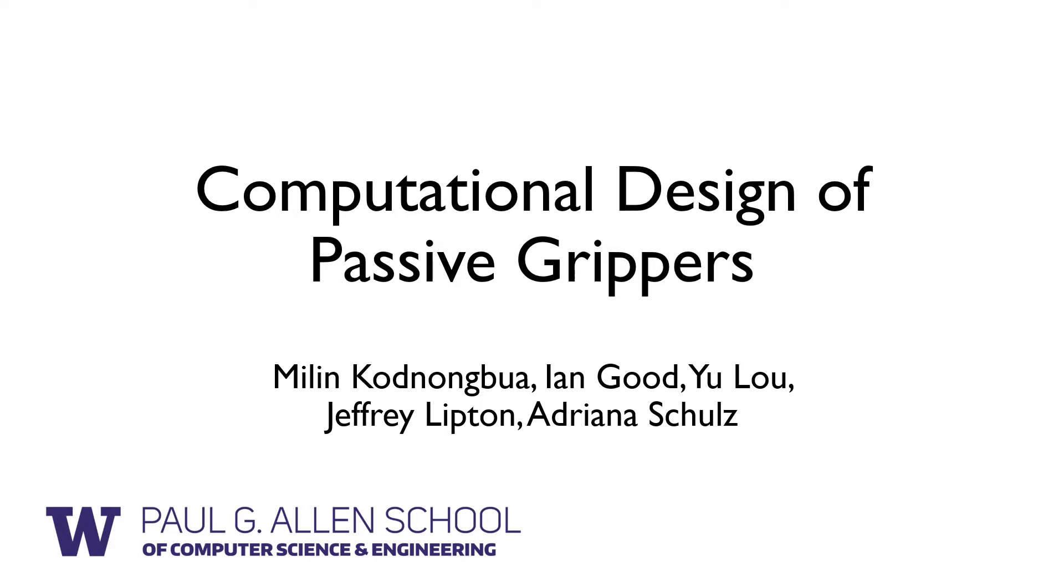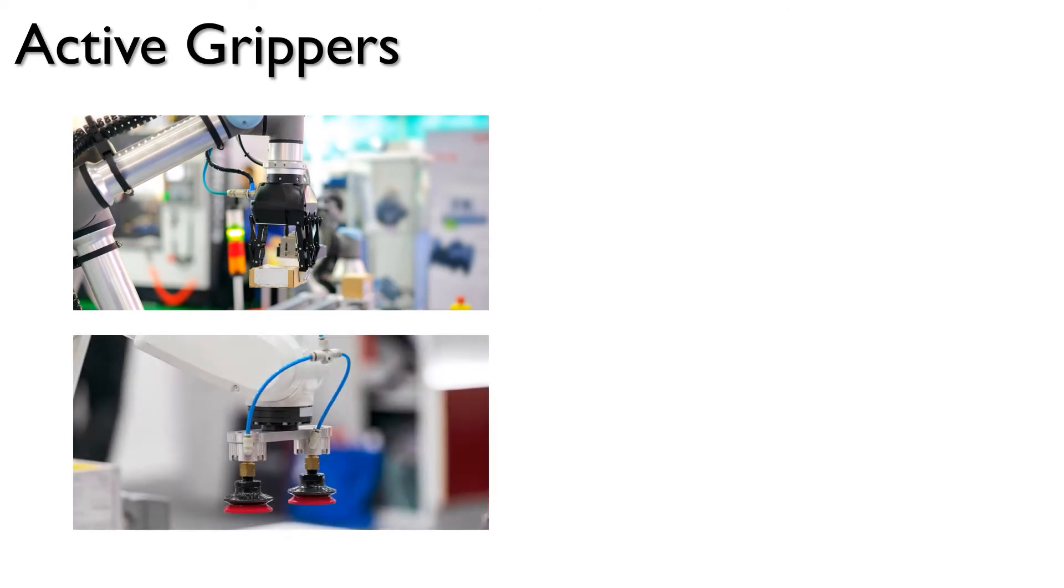Grippers are important tools for picking and placing objects in modern assembly lines. Active grippers like parallel jaw grippers or suction cups are widely used because of their versatility.